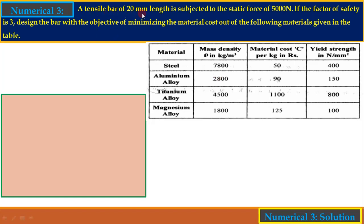A tensile bar of 20 mm length is subjected to a static force of 5000 N. If the factor of safety is 3, design the bar with the objective of minimizing the material cost out of the following materials given in the table. This is a bar subjected to a tensile force of 5000 N, its length is 20 mm, and the factor of safety is 3.